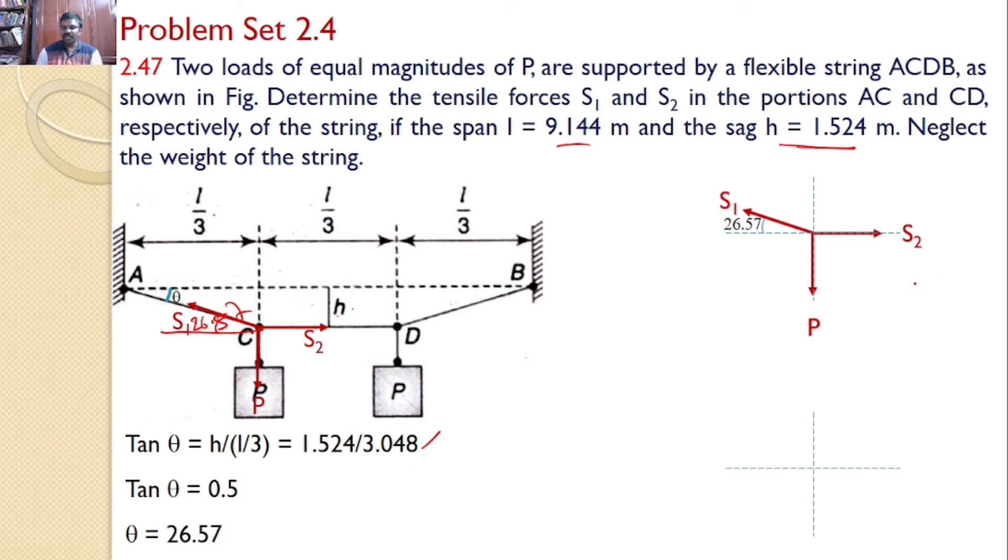Let us divide all these forces along X axis and Y axis. P is a vertical force, you need not resolve. S2 is a horizontal force, you need not resolve. But S1 makes an angle 26.57 with the horizontal, hence the horizontal component is S1 cos 26.57 and vertical component is S1 sin 26.57. The direction of these two forces are like this because S1 is in the second quadrant.